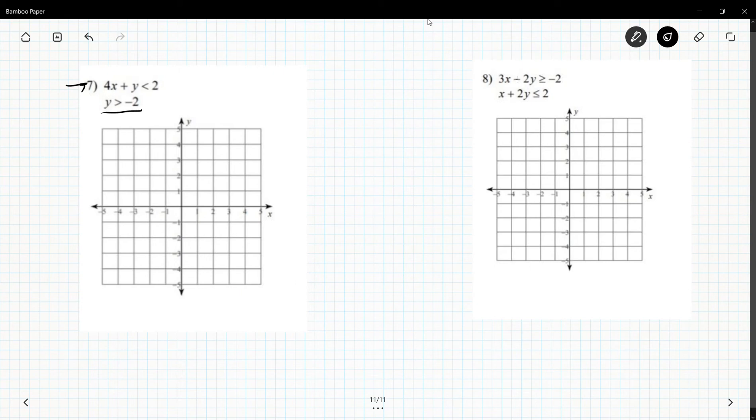The other line is y is greater than negative two. So this is a one step, this is really y is less than negative four x plus two.